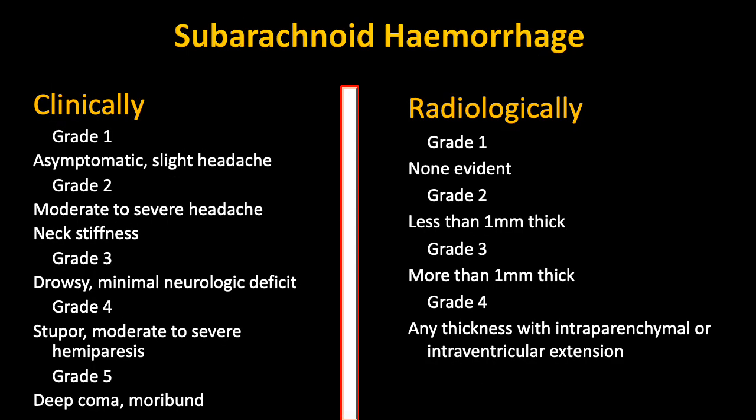Clinically there are five grades of subarachnoid hemorrhage ranging from slight headache and asymptomatic to severe. Radiologically, grade one would never be visible on CT — it can only be detected by lumbar puncture testing the CSF fluid for blood. Grade two is less than one millimetre thick; grade three is more than one millimetre thick; grade four can be any thickness with intraparenchymal or intraventricular extension. Once blood enters the intraventricular system, significant bleeding and CSF circulation disturbance has occurred.